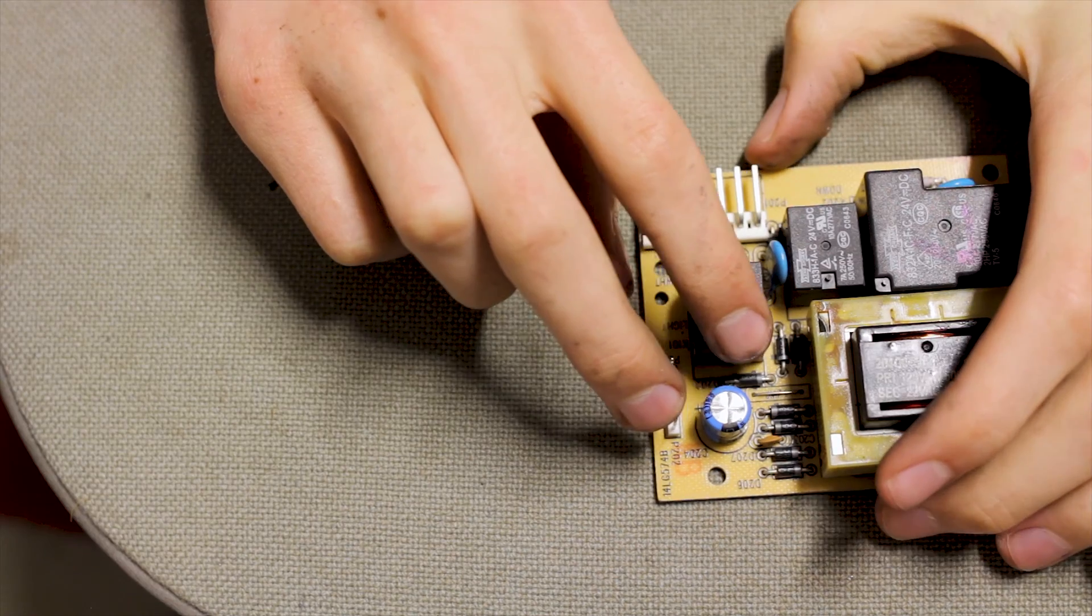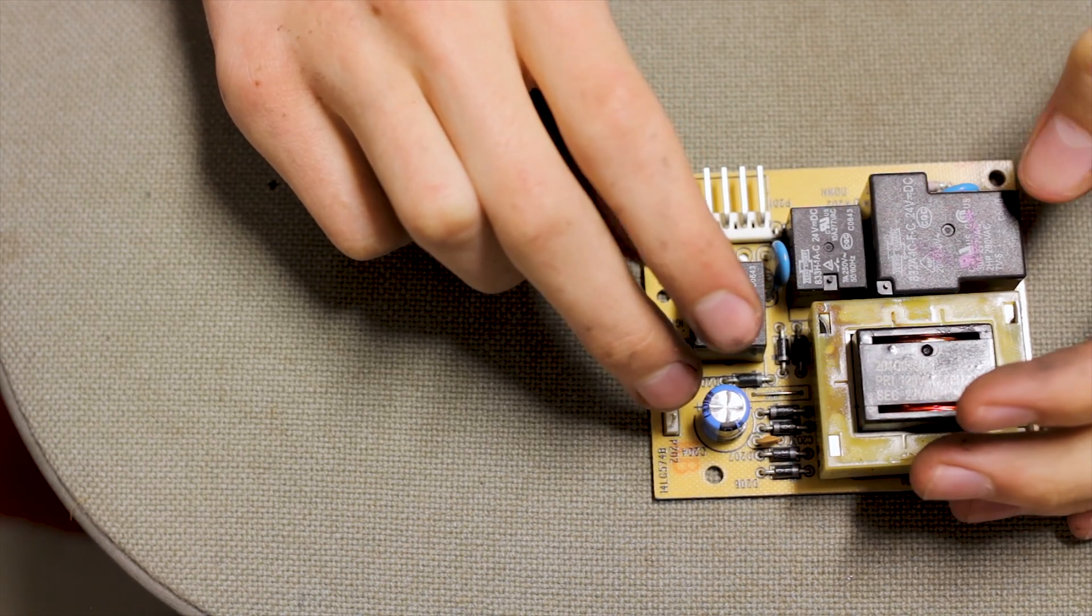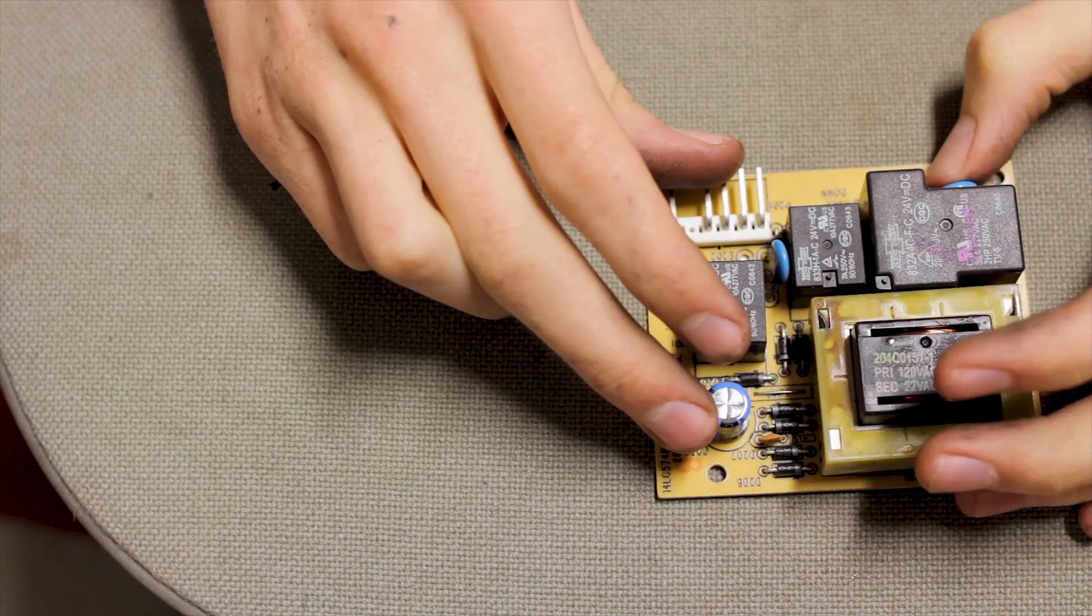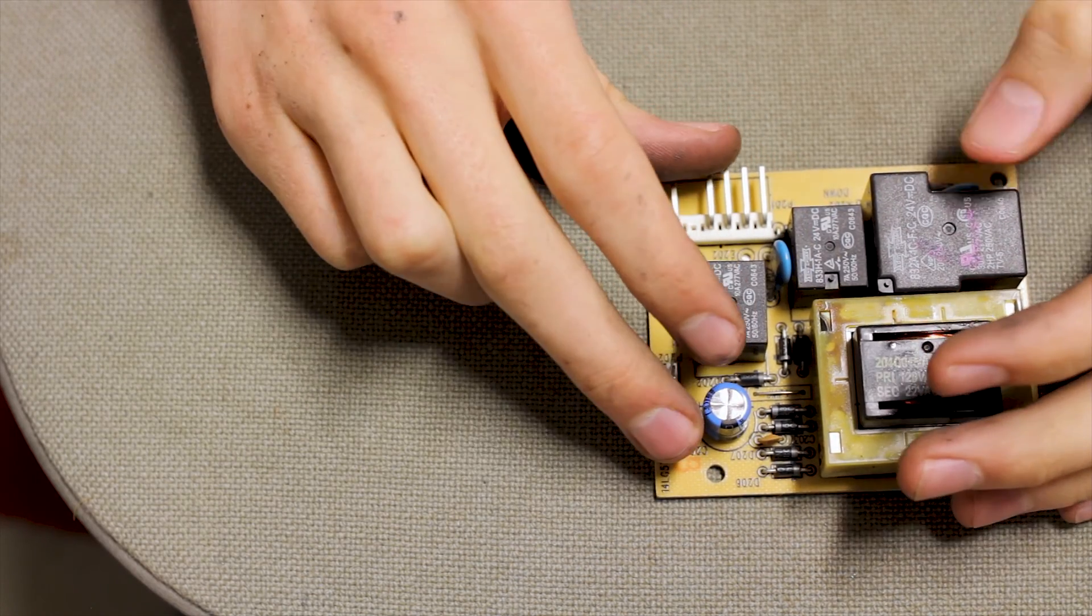That goes to a capacitor and all the regulation's done on the other board. We got a couple of diodes here to get rid of the voltage spikes, and then we got a couple of MOVs around here and capacitors. Got a couple of little capacitors here probably just to smooth out the AC spikes and a few other things due to the switching.